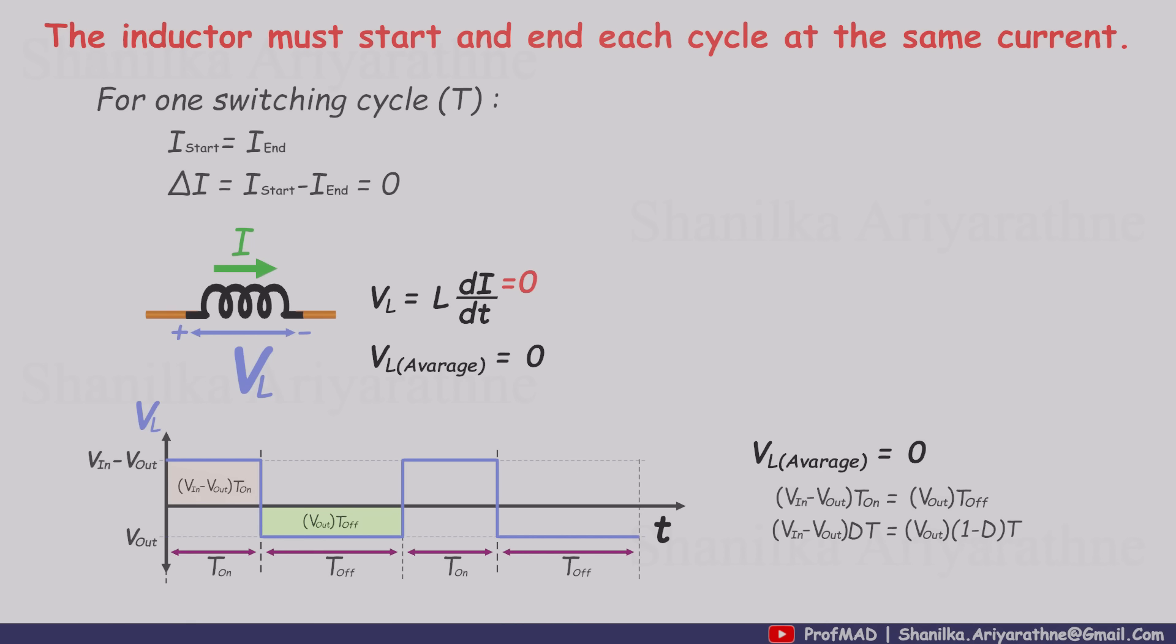Now we plug in T on and T off using the duty cycle expressions we already defined. After simplifying, we get the classic buck converter result, V out over V in equals D.